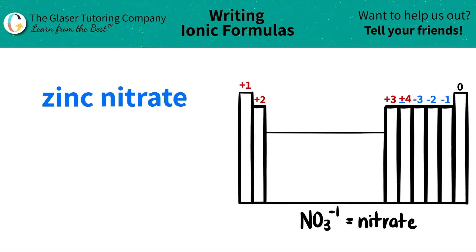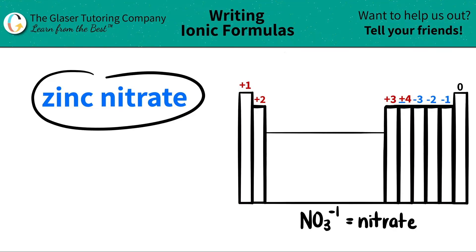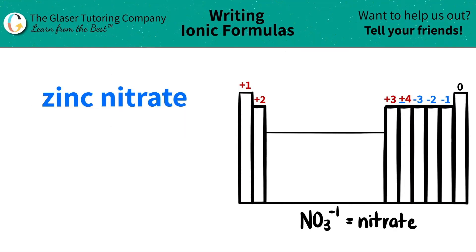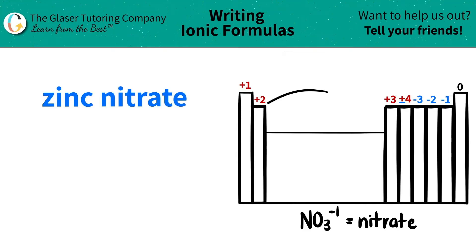Today we are going to be writing the formula for the ionic compound zinc nitrate. Let's work from left to right. The first thing I see is zinc. I'm going to scan the periodic table to see where zinc is, and I find it — it's right in this little corner right here. Zinc is Zn.